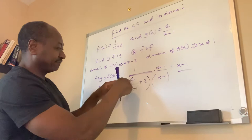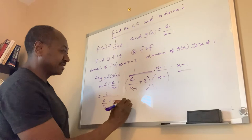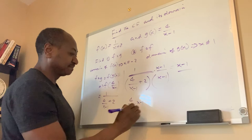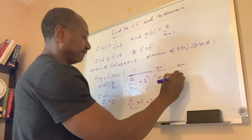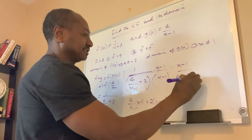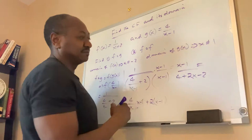I will take 4 divided by x minus 1, times x minus 1 — that cancels out — and then I have plus 2 times x minus 1. This cancels out, so what I have at the bottom is going to be 4, plus multiplying through: 2x minus 2.